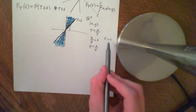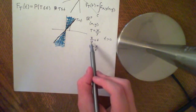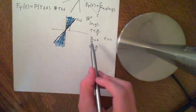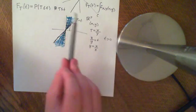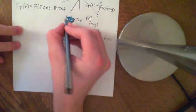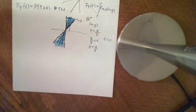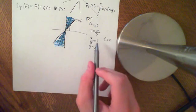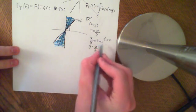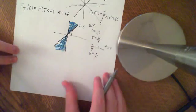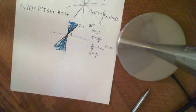Now what happens when t passes 0? As t approaches 0, we see it converging up on the vertical y-axis, a line of infinite gradient. When t is equal to 0, that implies x equals 0, so that's the line x equals 0. So that case is included in the event.